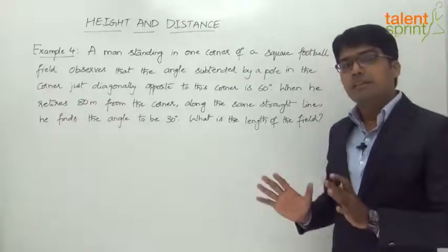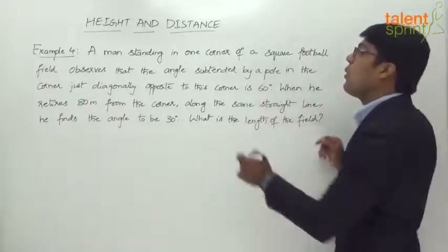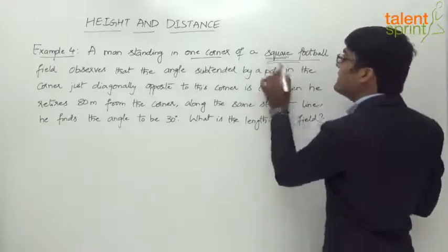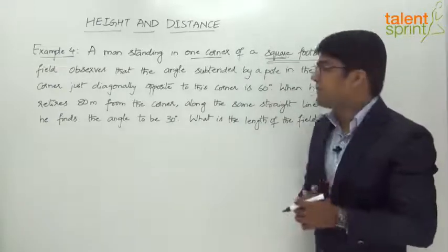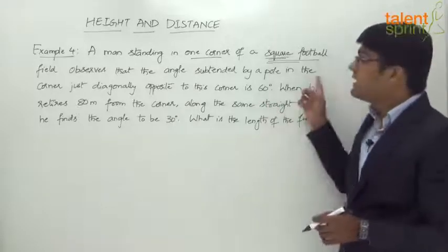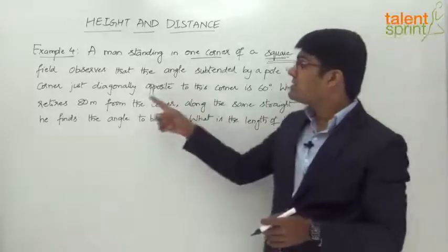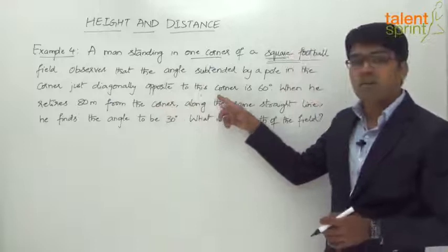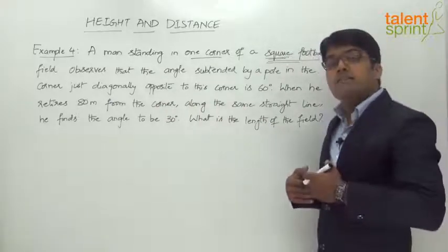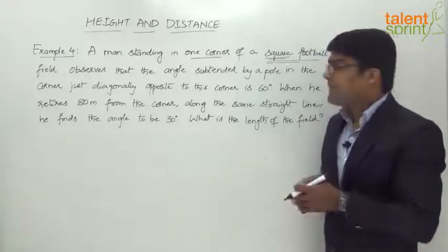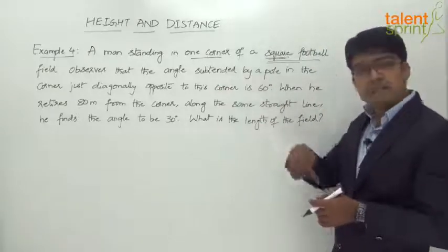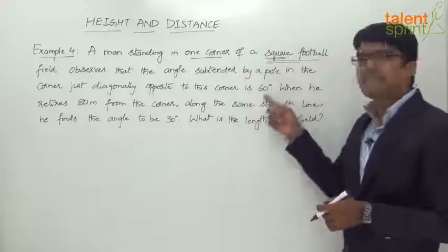Try to get the point very clear here. A man is standing in one corner of a square football field. The football field is square in shape. He observes that the angle subtended by a pole in the corner just diagonally opposite to this corner. He is standing at one corner and the pole is in the diagonally opposite corner. The angle subtended by that pole which is in the diagonally opposite corner is 60 degrees.